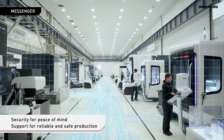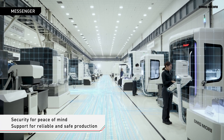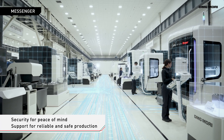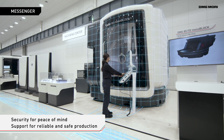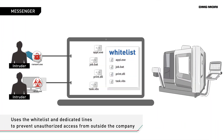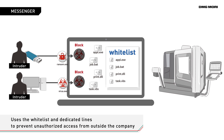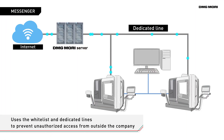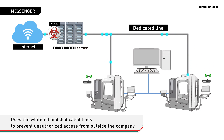DMG Mori takes solid security measures for you to use online connected machines with peace of mind. Communication is made using dedicated lines to prevent unauthorized access from outside the company, which also prevents external attacks via the internet.